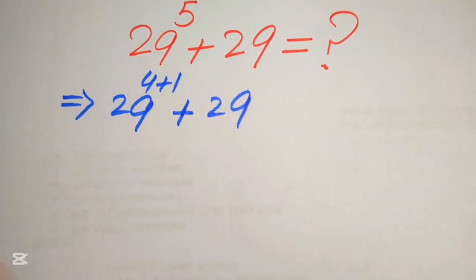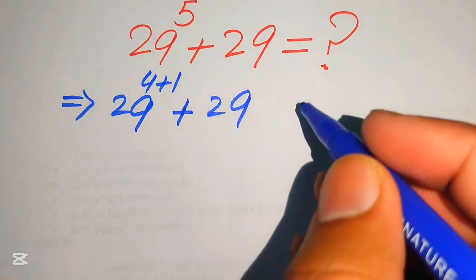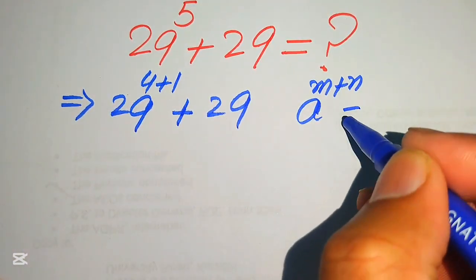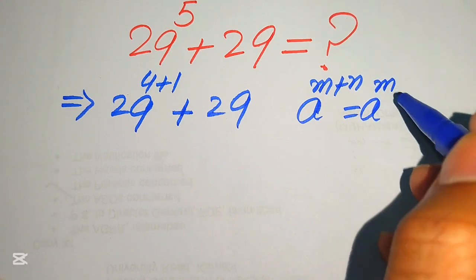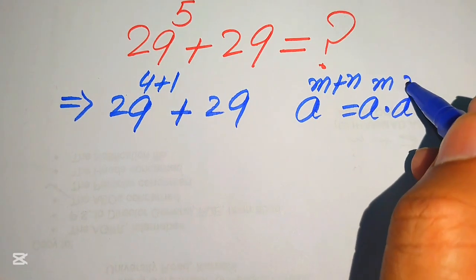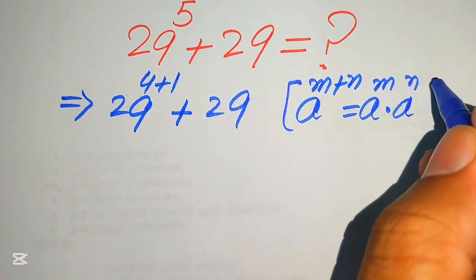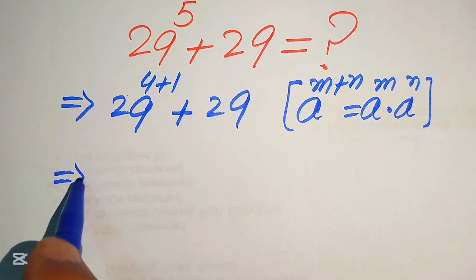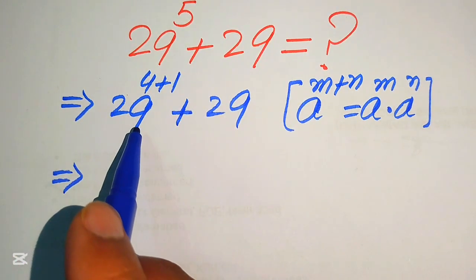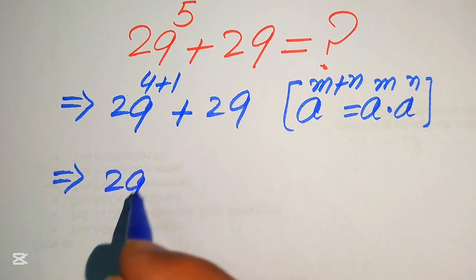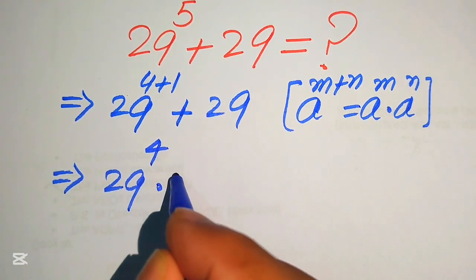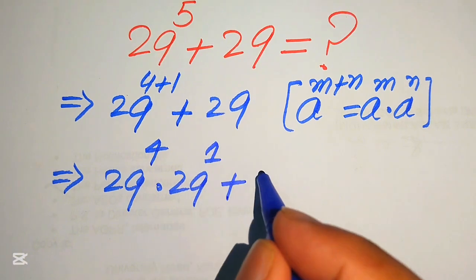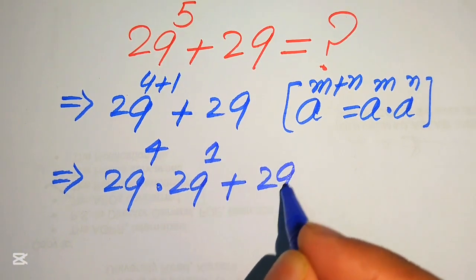Now in the next step we apply the exponent law: a to the power of m plus n equals a to the power of m multiplied by a to the power of n. Using this law on the first term, we rewrite it as 29 to the power of 4 multiplied by 29 to the power of 1, plus 29.